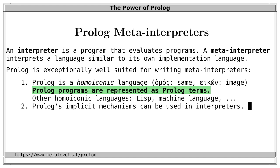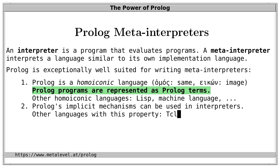Prolog has a second important feature: its implicit mechanisms can be used in interpreters. That's less unusual because it holds for all programming languages. For example, a Tcl meta-interpreter can benefit from Tcl's garbage collection, a PostScript meta-interpreter can benefit from PostScript's implicit value and dictionary stacks, and a C meta-interpreter can also benefit from implicit features such as the implicit call stack.